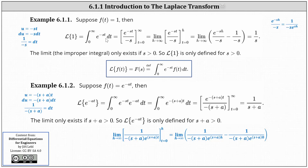To integrate, we need to perform u-substitution, where u is equal to negative st and du is equal to negative s dt. Solving for dt, we have dt equal to one divided by negative s, which gives us the antiderivative of e to the power of negative st divided by negative s, with limits of integration from t equals zero to infinity. Because we have an upper limit of infinity, we have an improper integral, which we rewrite using limit notation, replacing infinity with h. We then find big F of h minus big F of zero, where big F of zero equals one divided by negative s, since e to the power of zero equals one.